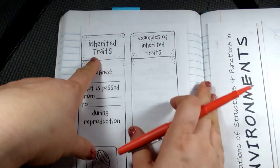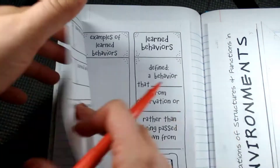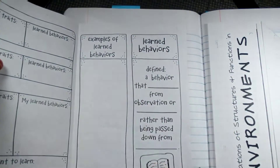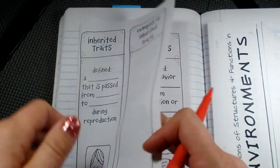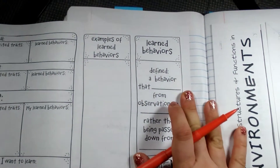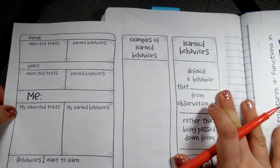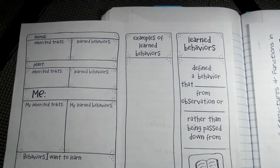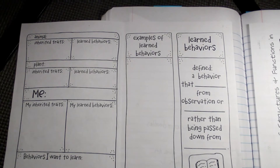We're going to be talking about inherited traits and learned behaviors. You're going to get this page — we're going to glue it on the back and stick it in on the next page after your adaptation notes. When we're talking about adaptations, adaptations are characteristics that help an animal or plant survive. Now there are different kinds of adaptations.